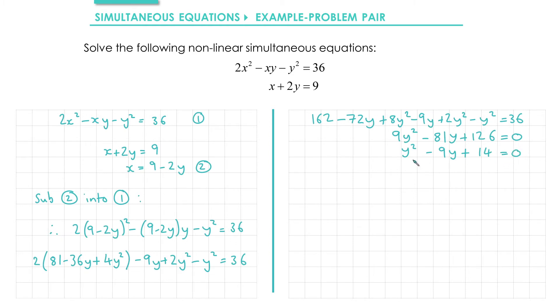And this quadratic factorizes to give us (y - 2)(y - 7). If we solve this equation, we get y = 2, or y = 7.